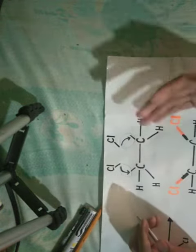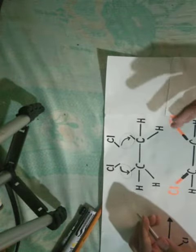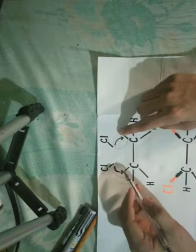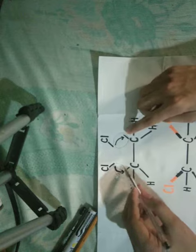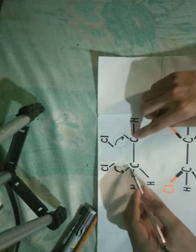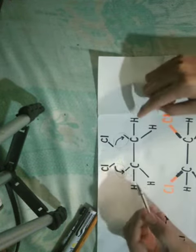When etine breaks partially, after this, the two carbon atoms in turn combined with one chlorine atom each.